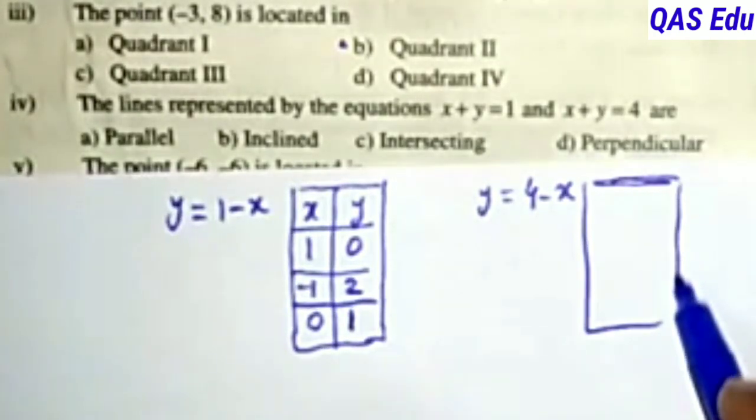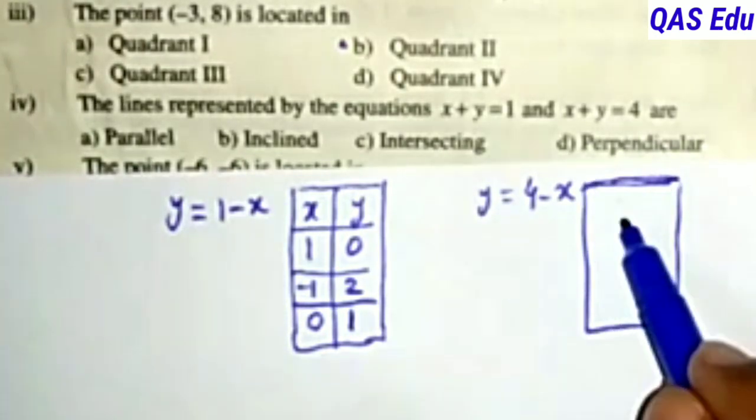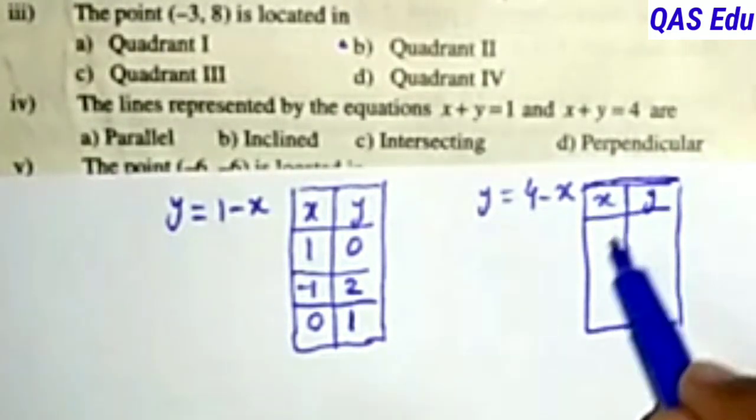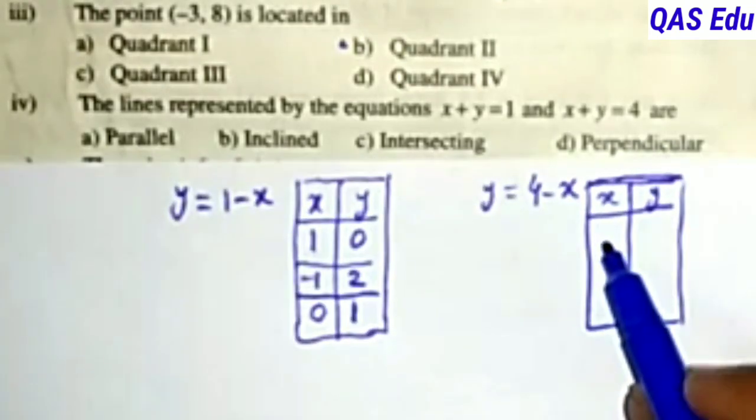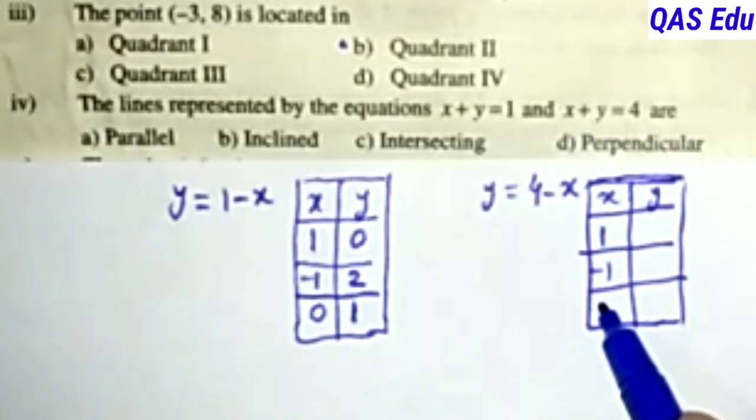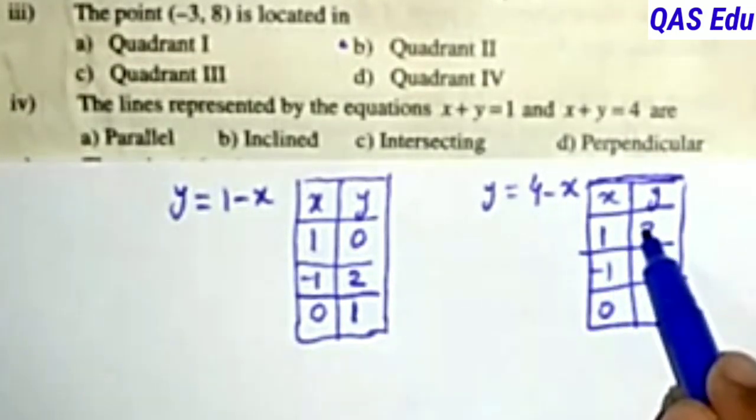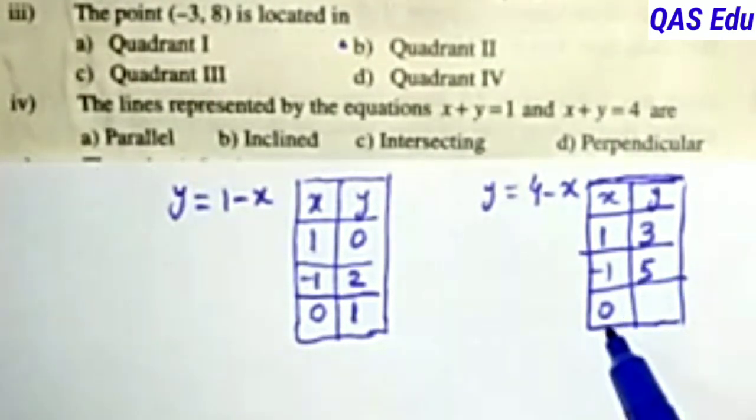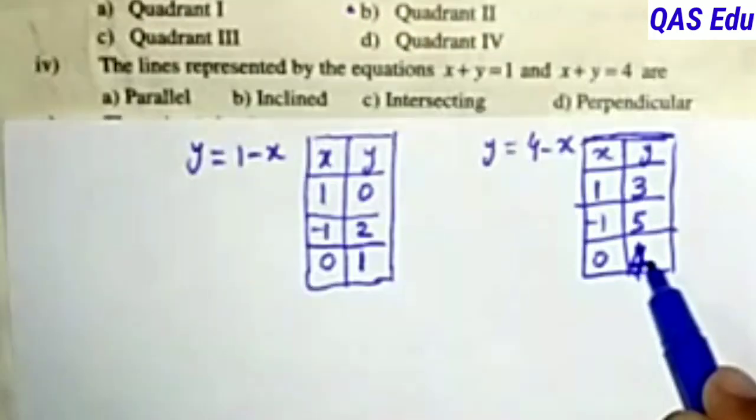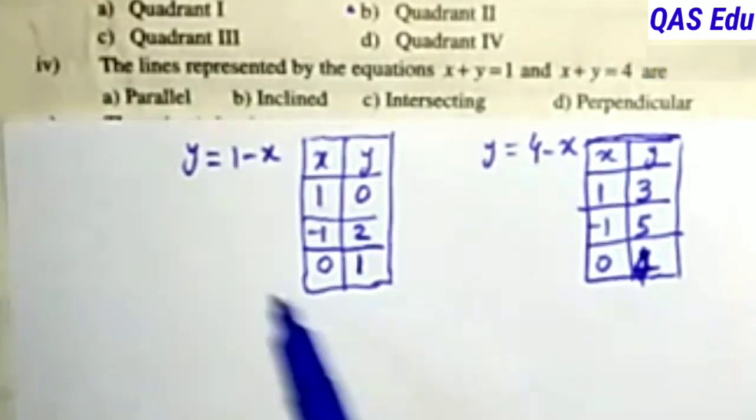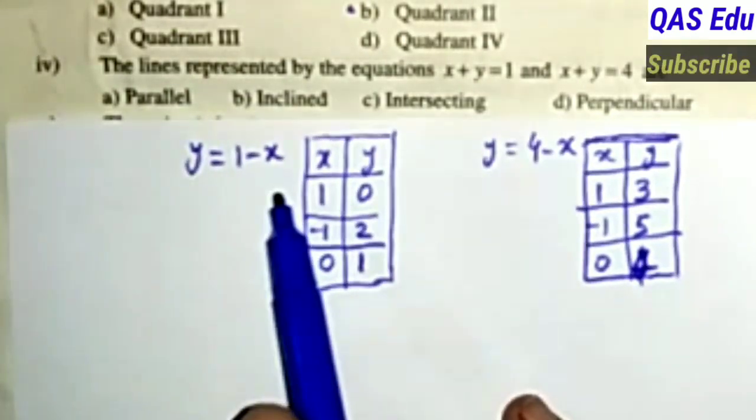If x = -1, then y = 1 - (-1) = 1 + 1 = 2. If x = 0, then y = 1 - 0 = 1. Now for the second equation, we create table of values.